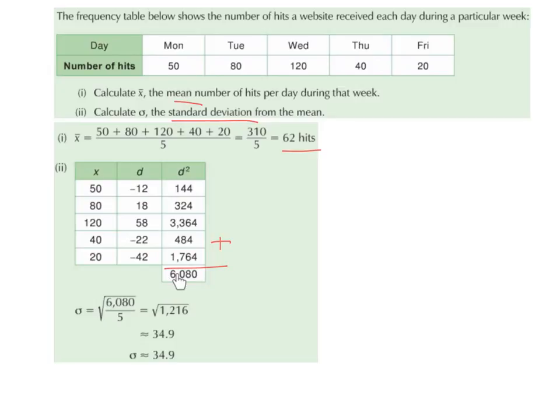So then we're going to divide 6080 by the amount of values, which is 5. So 6080 divided by 5 is 1,216. And then we're going to get the square root of that, which is 34.9. So the standard deviation is approximately 34.9.